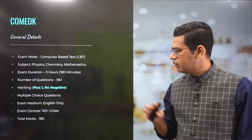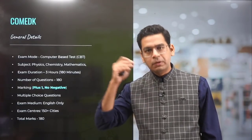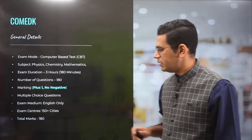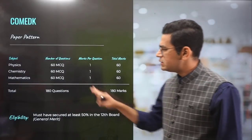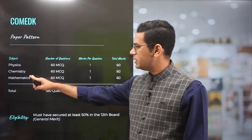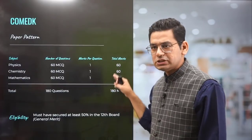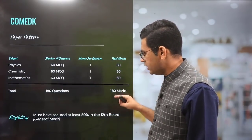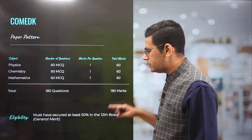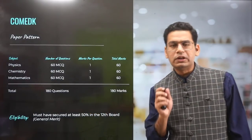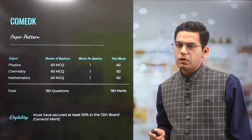You can take the COMEDK examination from different parts of the country — it is not that you have to come to Karnataka only to write this exam. The distribution is 60 marks in physics, 60 marks in chemistry, 60 marks in math — that is 180 marks total. You have to secure at least 50% in the 12th board, which is the basic eligibility criteria for COMEDK.